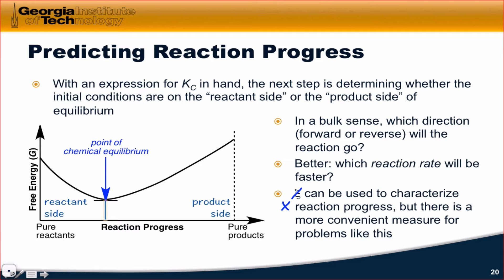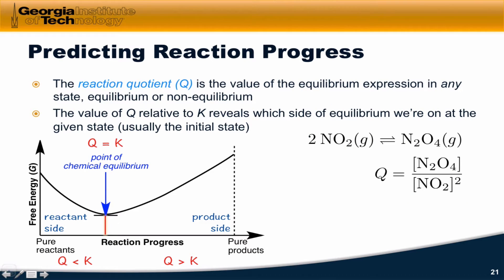You can imagine if we're given concentrations, it's a little bit difficult to figure out the number of reaction events, especially if the stoichiometry is weird, if the stoichiometric coefficients are not equal to 1. Instead of working with reaction events, we can work with what's called the reaction quotient, Q.